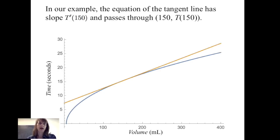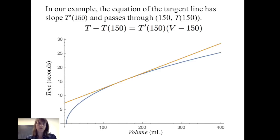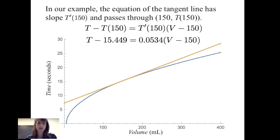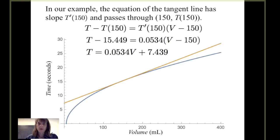Returning to the example, the equation of the tangent line has slope t prime evaluated at 150 and passes through the point (150, t(150)). Using point-slope form: t minus t(150) equals t prime(150) times (v minus 150). Making the substitutions for slope and t value, or using slope-intercept form, we get t equals 0.0534 times volume plus 7.439.